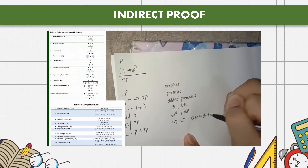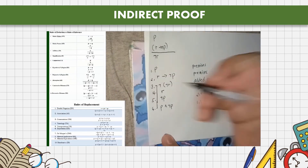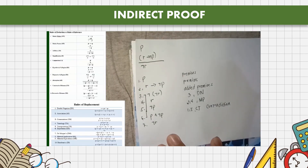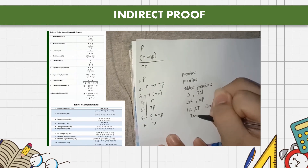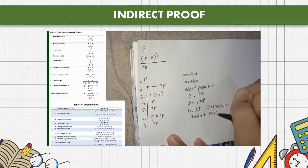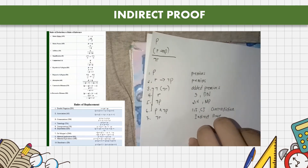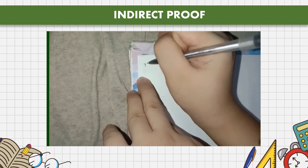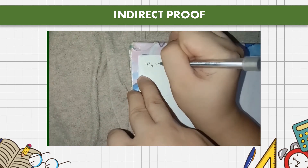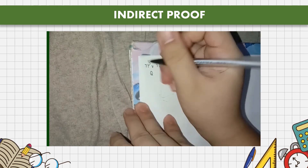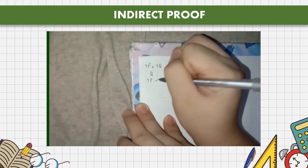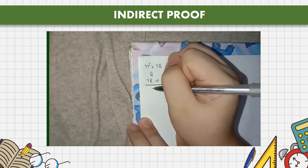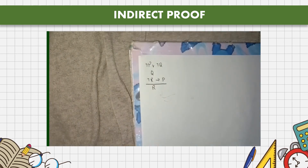Let's do another example to better understand this. Using the premises: not P or not Q, Q, not P implies R, find R. We list the three as our premises and add the added premise by negating R, giving us not R, since we need our conclusion's negation.